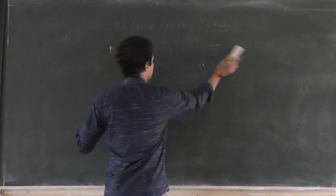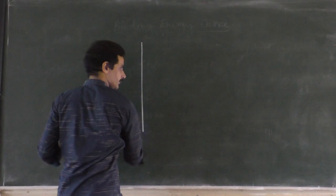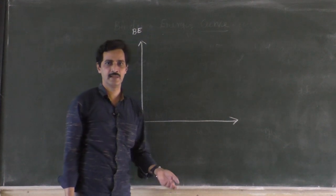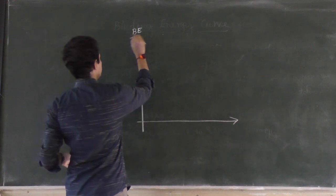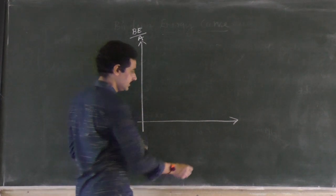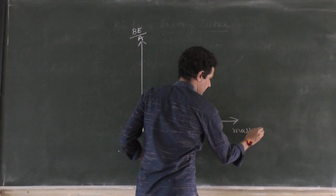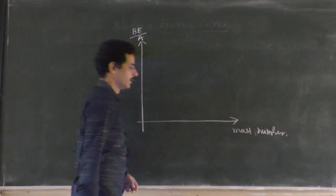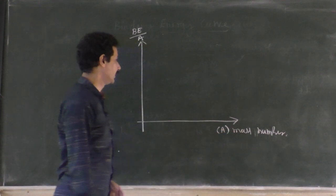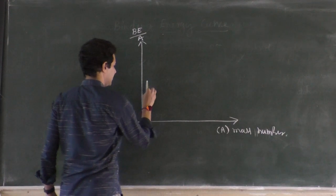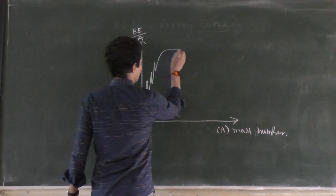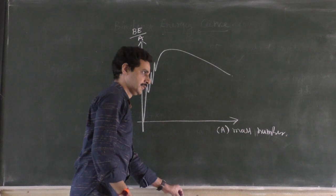If you draw a graph — and these are all things from the previous class — of binding energy per nucleon versus mass number, you get a curve. Be careful: you do everything correct in the examination but forget to write 'binding energy per nucleon' and simply write 'binding energy' — that is wrong and you will lose all the marks. Also, don't write atomic number on the x-axis; it should be mass number. The graph shows a sudden hike in binding energy per nucleon, then another hike, then a high value followed by a decrease.